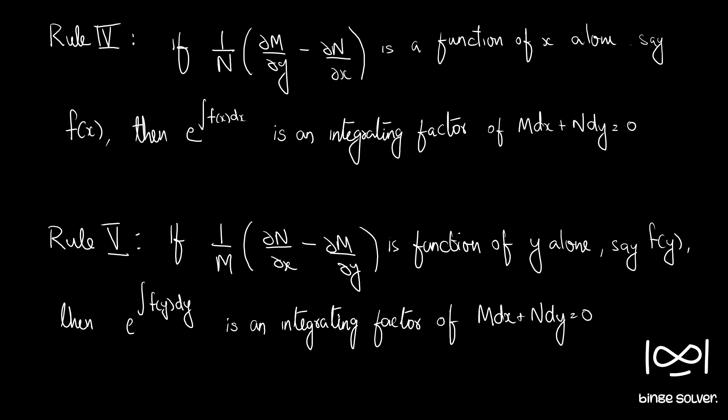Now in this video, we will be discussing two new rules: Rule 4 and Rule 5. Rule 4 says if (1/N)·(∂M/∂y − ∂N/∂x) is a function of x alone, say f(x), then e raised to the integral of f(x) dx is an integrating factor of M dx + N dy = 0.